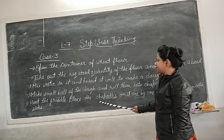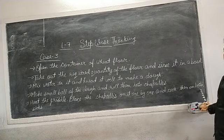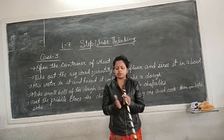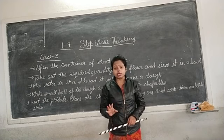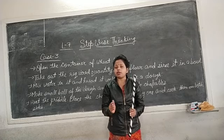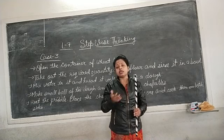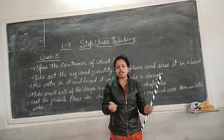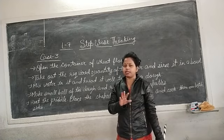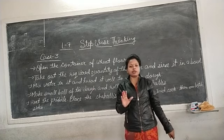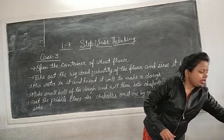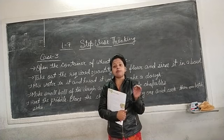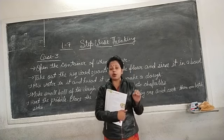Then heat the griddle and place the chapatis one by one, cooking them on both sides. When you have rolled the chapatis, heat the griddle, put them on one by one, and then serve them to whoever you want — either hot ones right away or whenever they want to eat. This is the process. I am not teaching you cooking classes, but this is according to this chapter, which is about step-by-step thinking.